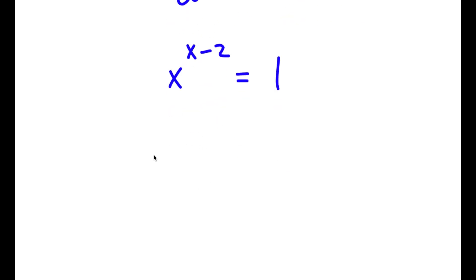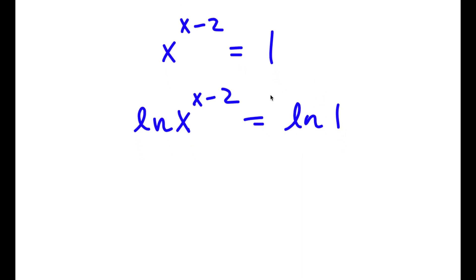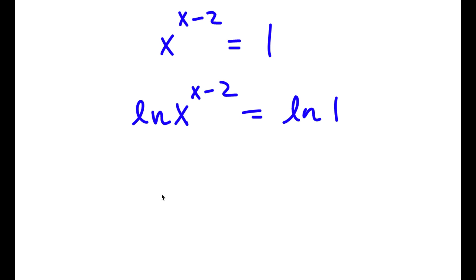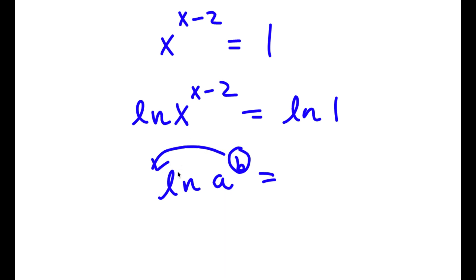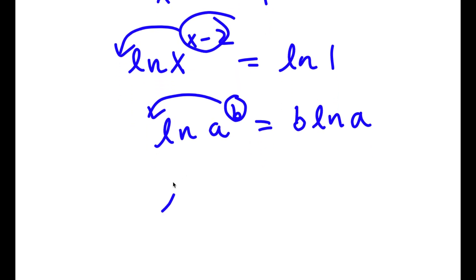Now, if I take the ln on both sides, I get ln of x to the power of x minus 2 is equal to ln 1. An important property of logarithms is that if I have something in the form ln a to the power of b, I can move the exponent b to the front of the logarithm. So this equals b times ln a. So for ln of x to the power of x minus 2, I can move x minus 2 to the front.